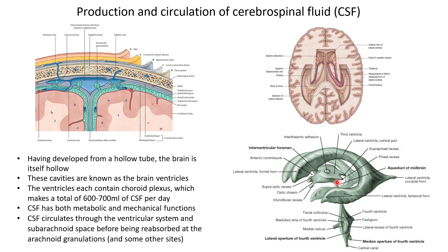The cerebral aqueduct is very important clinically because a number of disorders can lead to it becoming narrowed or even completely blocked, leading to dilatation of the lateral and third ventricles. The cerebral aqueduct drains CSF from the third ventricle down into the pyramid-shaped fourth ventricle. Whereas the third ventricle sits at the level of the thalamus, the fourth ventricle sits at the level of the pons and medulla, with the cerebellum forming its roof. It is in the fourth ventricle that CSF escapes from the ventricular system and enters the subarachnoid space.